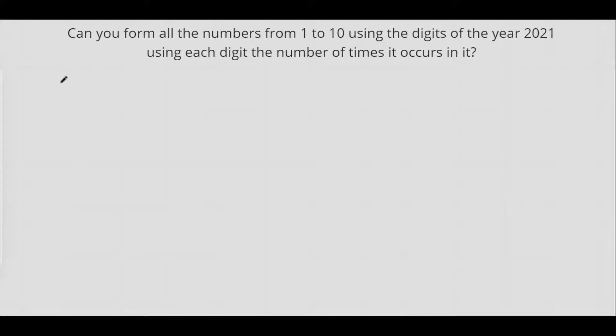Hello everyone, welcome back to the channel. The question we're going to discuss today is: can you form all the numbers from 1 to 10 using the digits of the year 2021, using each digit the number of times it occurs in it?